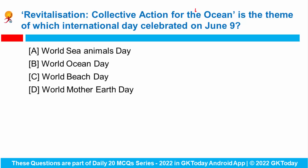Next question: 'Revitalization: Collective Action for the Ocean' is the theme of which international day celebrated on June 8? The United Nations designated 8th June as World Ocean Day, through which awareness is created about how we should save our oceans and use them sustainably for the future. This year's theme was 'Revitalization: Collective Action for the Ocean'. The correct answer is World Ocean Day.